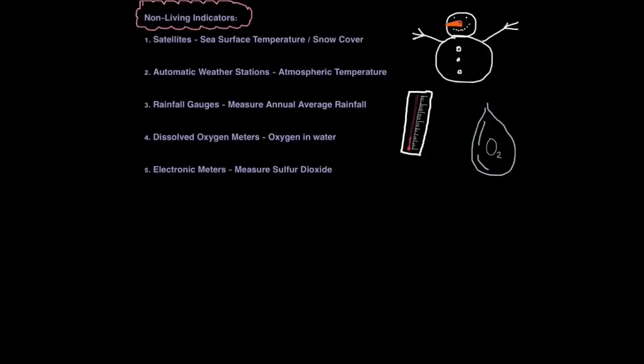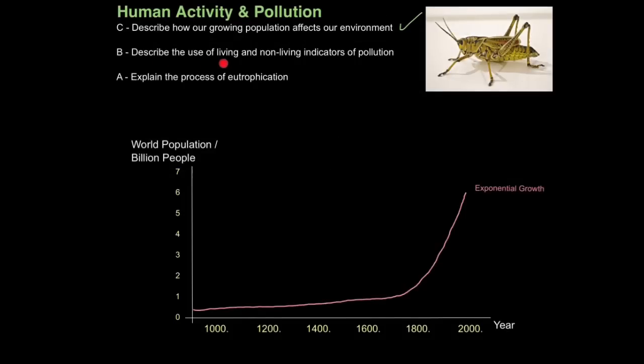But we don't always have to rely on living indicators. We can also rely on non-living indicators. For this we have satellites which can detect changes in sea surface temperature and also the amount of snow that covers our Earth, which is a good indicator of climate change. We have automatic weather stations which are very sensitive at detecting subtle changes in atmospheric temperature. We have rainfall gauges which measure the amount of annual average rainfall. Again, indicators of climate change. We have meters that can read the levels of dissolved oxygen in the water so we get an idea of how polluted the water is. And we can also use electronic meters which measure the levels of sulfur dioxide which is linked to acid rain. So that's how we describe the use of living and non-living indicators of pollution.